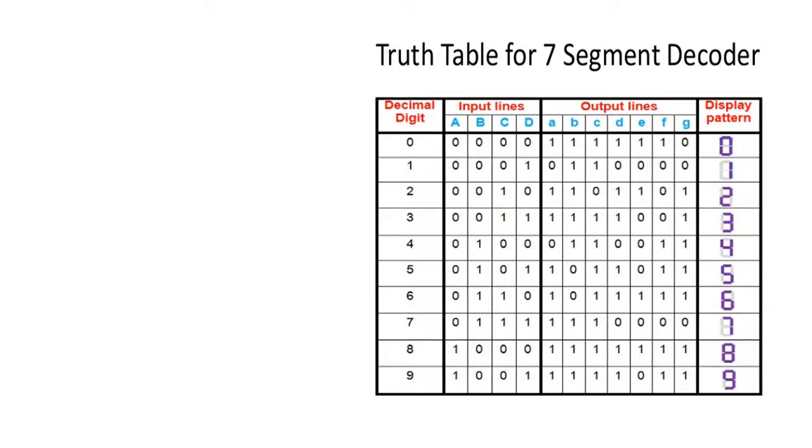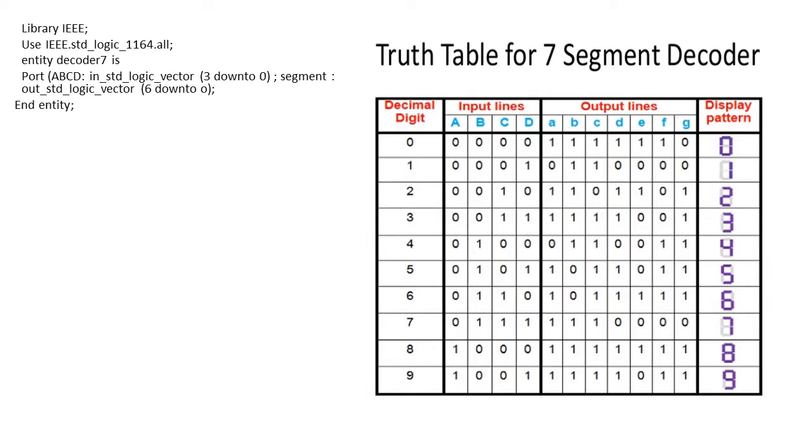Coming to its VHDL code, we start with defining the library element as IEEE and use all the functions from it. We define the entity name as decoder7 is. We declare the port as ABCD with standard logic vector 3 downto 0, and segment as output whose length is 6 downto 0, which will generate 7 segments.